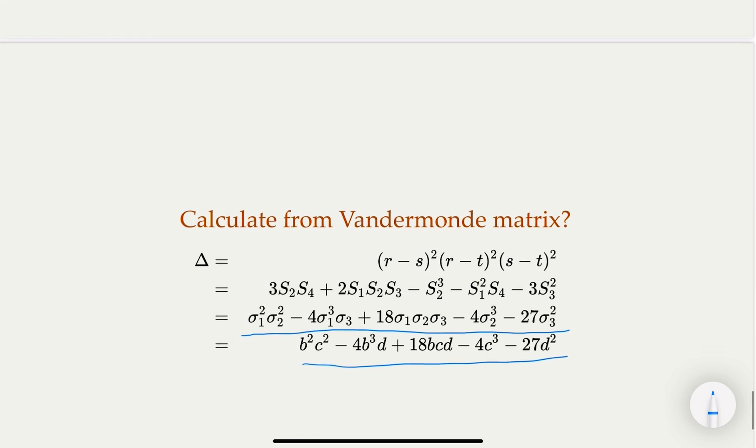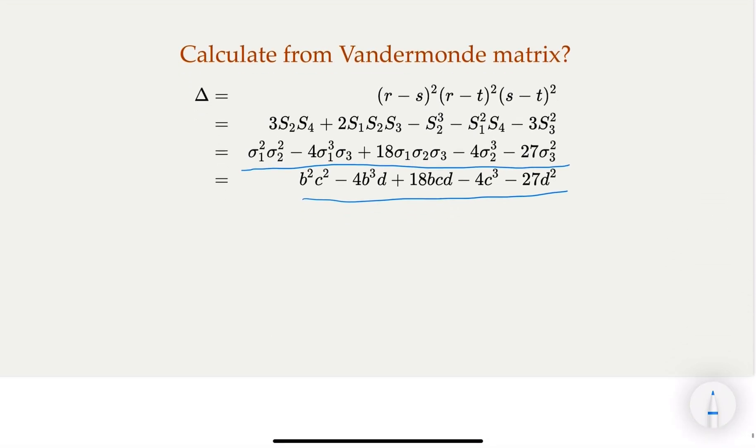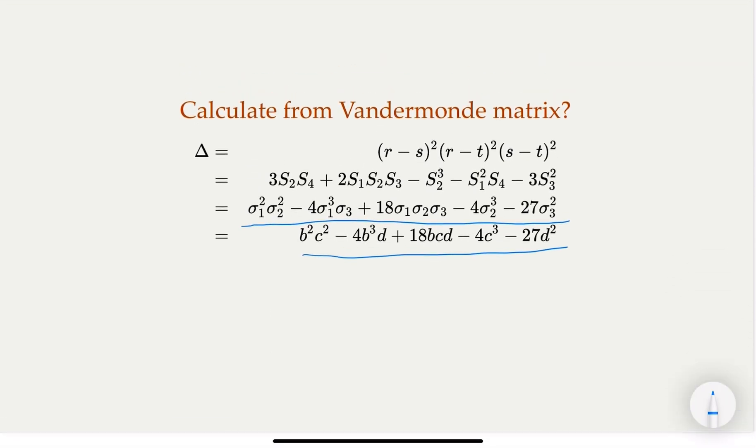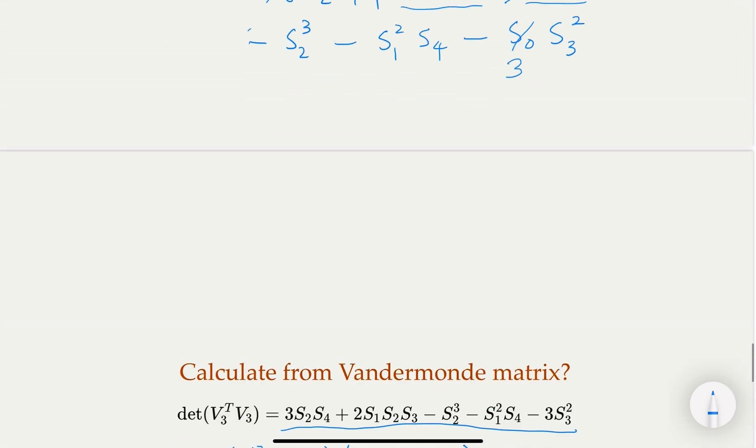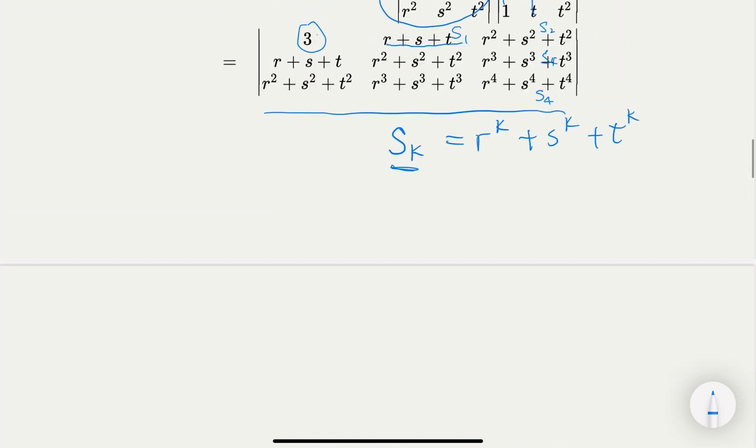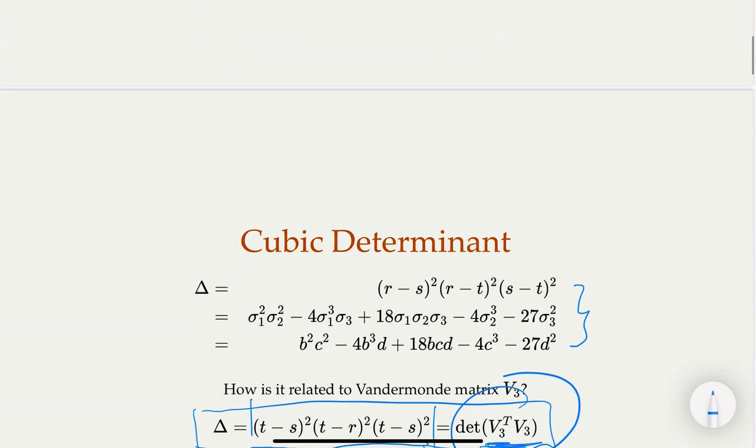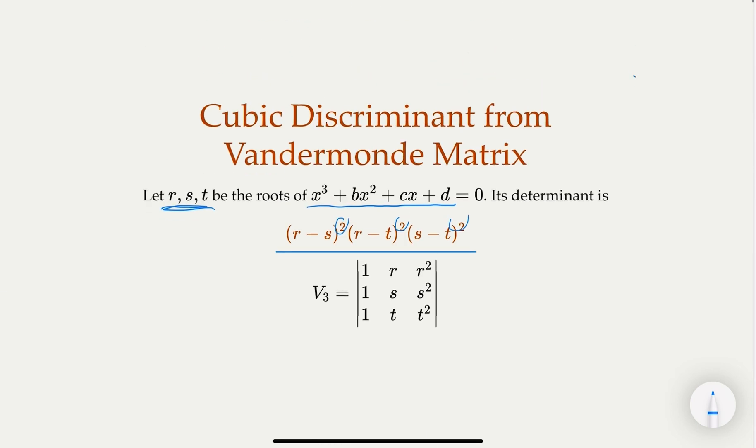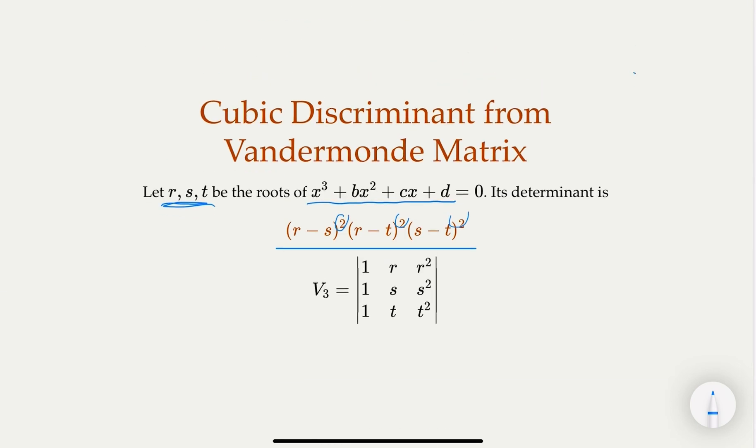But today we did it from a different angle. That's it for today. Hopefully you'll find it interesting, the fact that we can make connections between the degree 3 Vandermonde matrix and the cubic discriminant. Thank you.